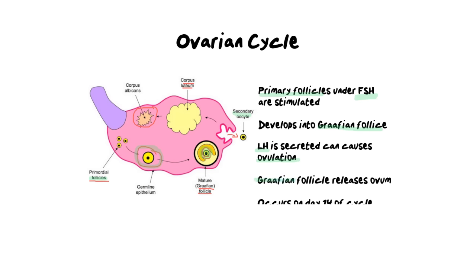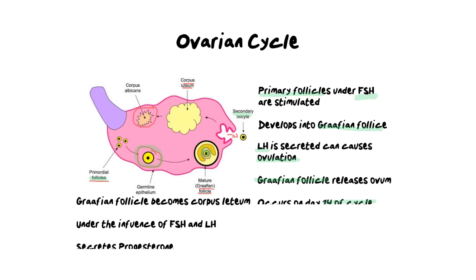The graafian follicle is the structure that releases our ovum on ovulation day, and ovulation day occurs around day 14 — right in the middle of the cycle. Now that the graafian follicle is empty it becomes a structure called the corpus luteum. Corpus actually literally means body, and the corpus luteum plays a really important role linked to pregnancy. Under the influence of FSH and LH still being secreted from the pituitary gland, it starts to shrink as the graafian follicle becomes the corpus luteum.